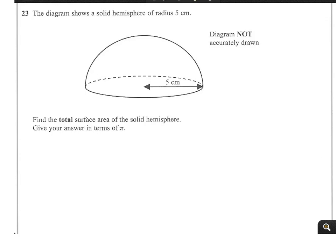In this question, we've been asked to find the total surface area of this solid hemisphere, giving our answer in terms of pi, which has a radius of 5.